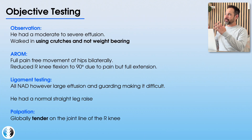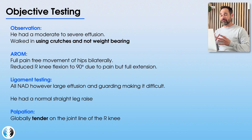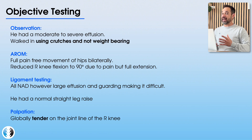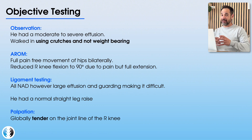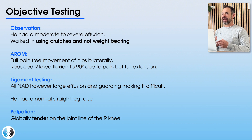Moving into our objective examination — remember this is four weeks after the initial injury. He presents with a moderate to severe effusion, moderate to severe swelling of his right knee still occurring four weeks later. He is still not able to weight bear on that leg; he's using crutches and cannot place his foot down to the floor. Looking at range of movement, he has really good range of movement of both hips, but his right knee can extend yet has significant difficulty flexing — only able to flex to 90 degrees.